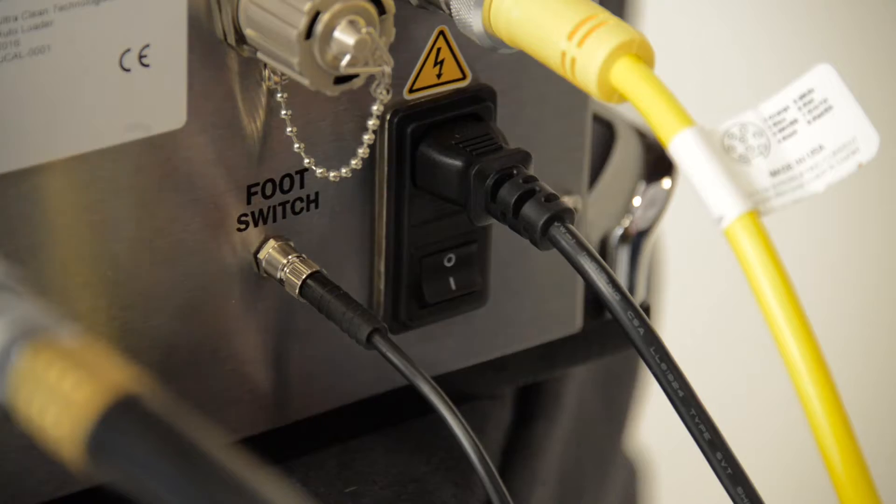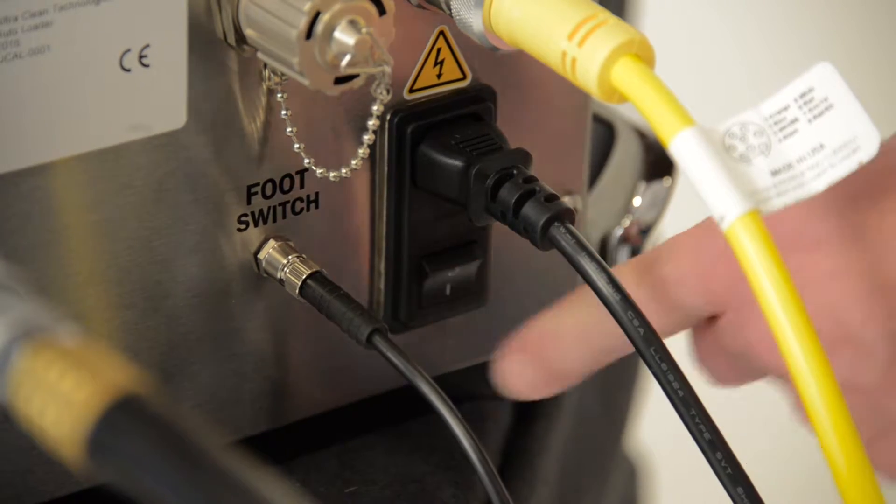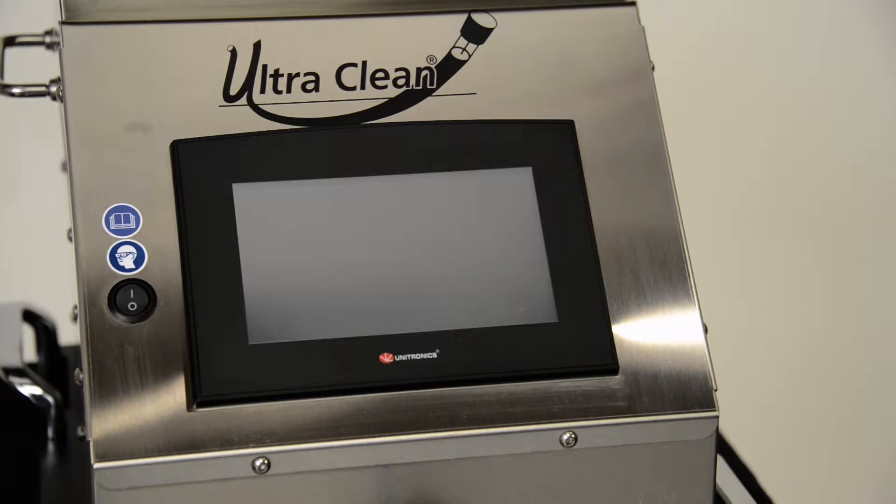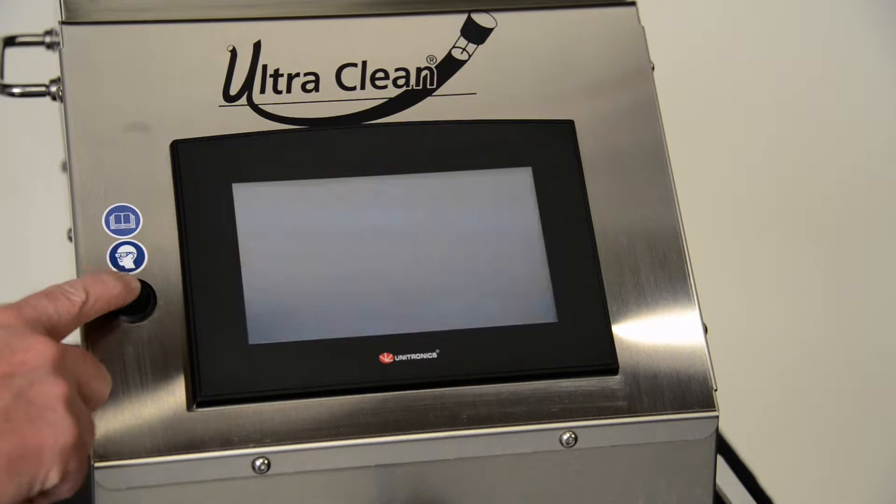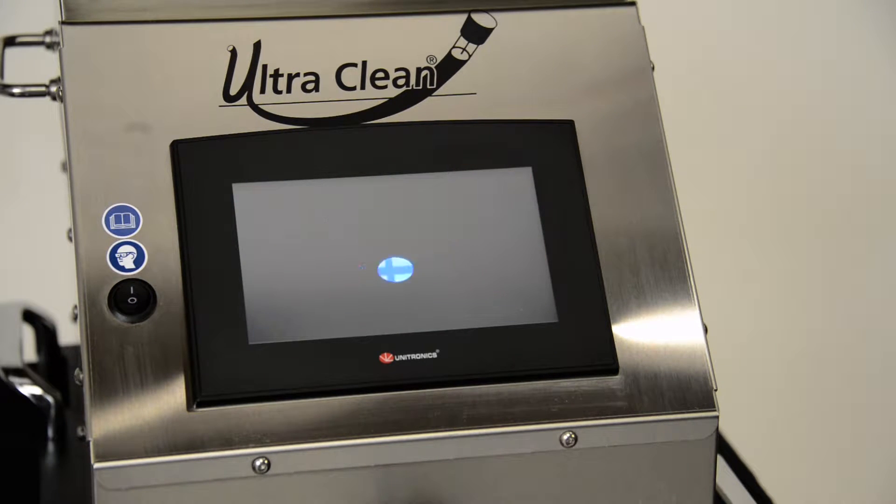The main power switch is located on the back of the system. The power switch for the HMI touchscreen is located on the front of the unit. Always turn on the main power first and the HMI touchscreen second.